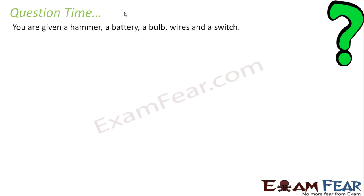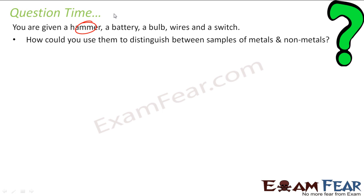If you are given a hammer, a bulb, battery, wire and switch, how will you use them to distinguish between the samples of metals and non-metals? So if you see here, with hammer, we can use this ductility or malleability property. We can just beat it. So we will beat that particular sample. If it is malleable, I can say that it is metal. That is one thing.